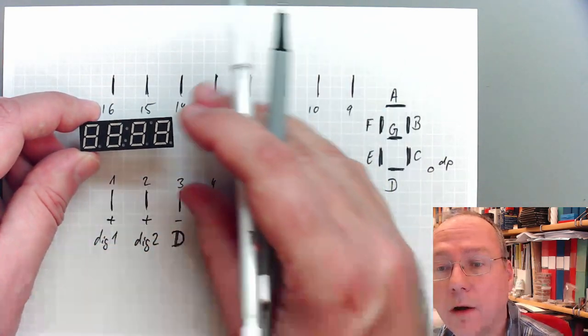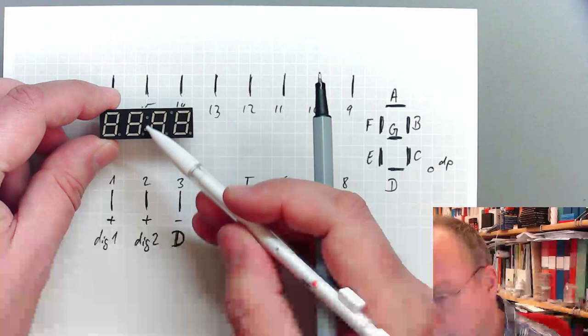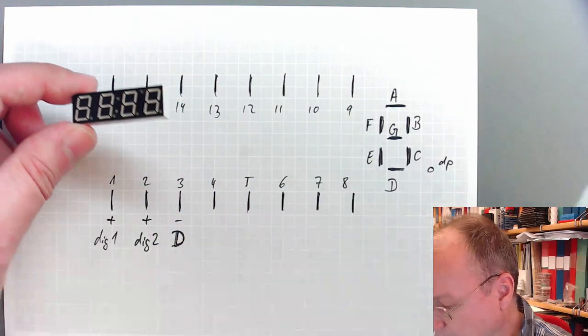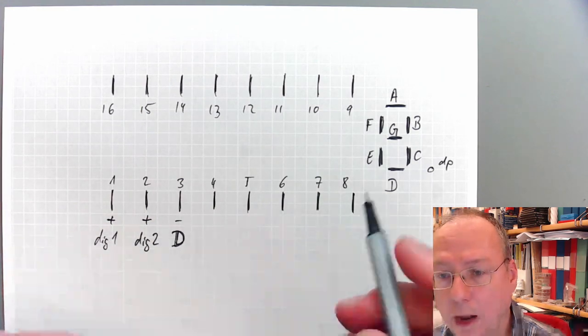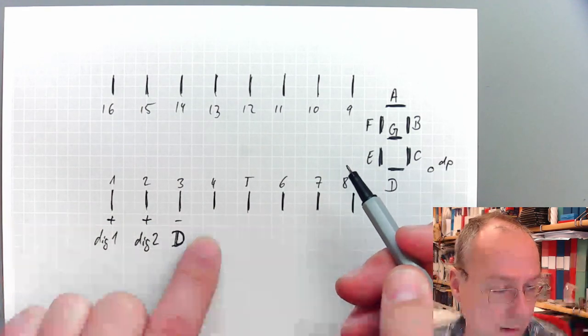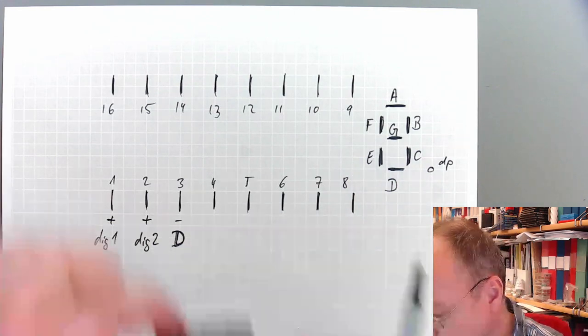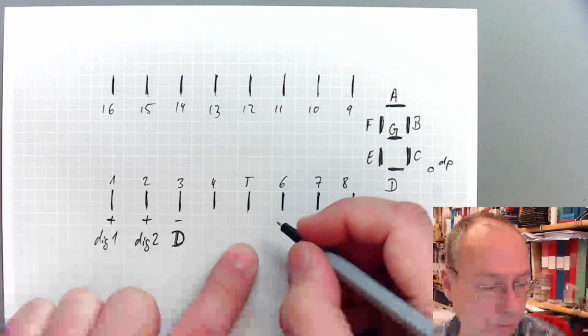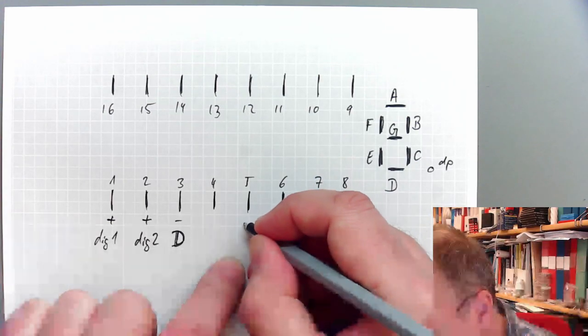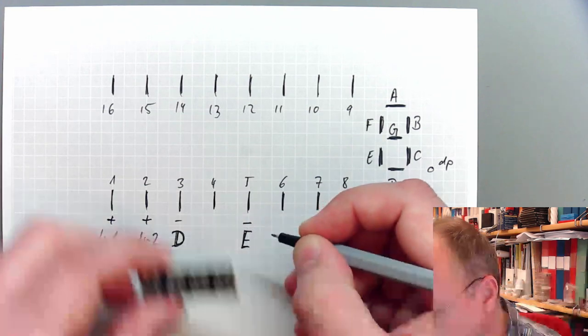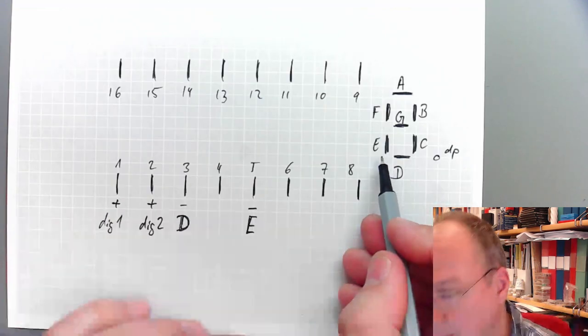And there are actually three more LEDs here in the middle and up here, but we will not care about these. And let's just have a look at how the rest is connected. So pin number four is actually connected to the two LEDs here in the middle diagonal. We will ignore these. Pin number five is the cathode or negative side of all the E segments.